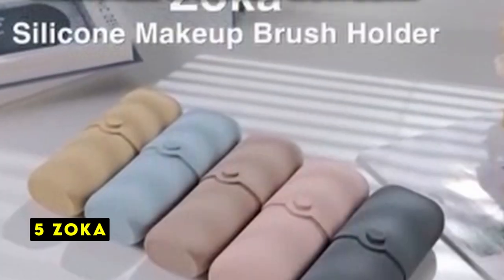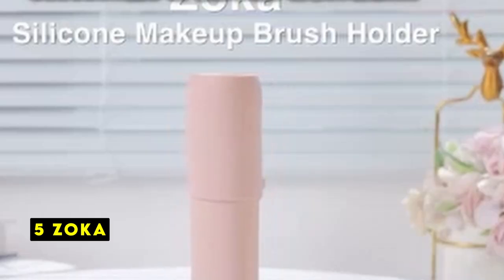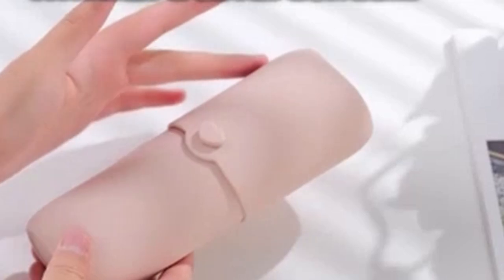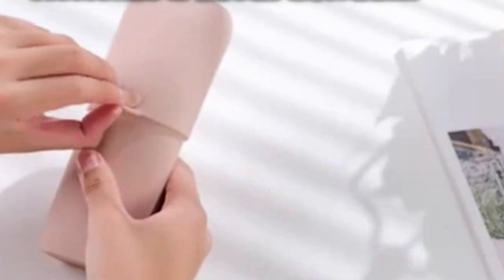On number 5 is Zoka. The Zoka makeup brush case is a compact and practical solution for storing and organizing your beauty essentials. With its ideal dimensions of 6.81 inches by 2.76 inches by 1.97 inches, it can comfortably accommodate at least 10 makeup brushes, making it perfect for on-the-go use.